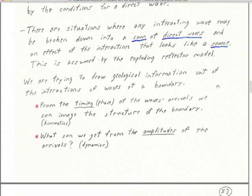This is really Kirchhoff's idea and also a physicist named Born. I'm a big fan of this idea that any interacting wave you can break down into a sum of direct waves, which have no interactions, plus an effect of the interaction that looks like a source. This comes from a viewpoint of an early paper in my career by Keiiti Aki at MIT and Wu Lu, who was visiting from China. Our exploding reflector model takes this concept fully — instead of a reflection, an interacting wave, we have an exploding reflector.